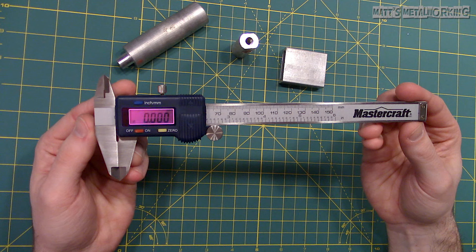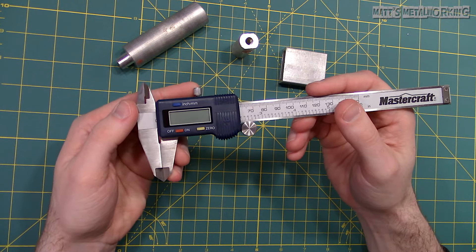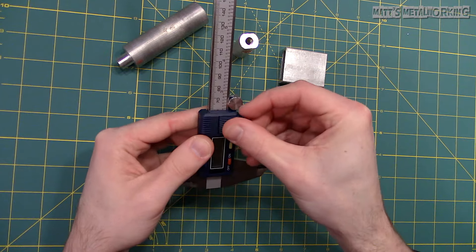The digital readout which shows the current measurement both in imperial and metric readings. The buttons around the display are used to turn the caliper on or off, zero the measurement and to switch between measuring systems.